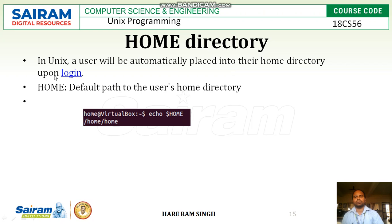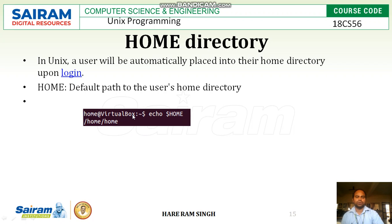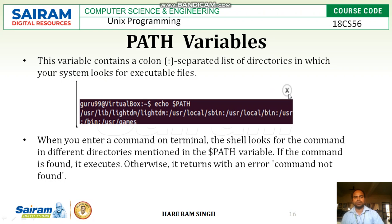In Unix, a user will be automatically placed into their home directory upon logging in. The $HOME variable contains the default path to the user's home directory. For example, if you type 'echo $HOME', it will display the home directory of the current logged-in user. The output shows the home directory, for example /root/home, indicating the home directory for the current user.